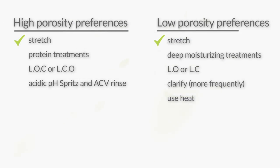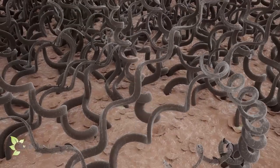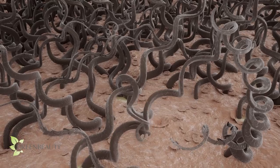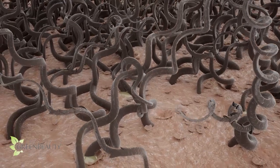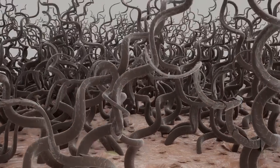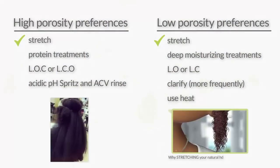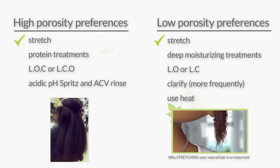Low porosity hair types also benefit a lot from stretching, for a different reason. Tight cuticles make hair strands more springy, so when a hair strand sheds it's more likely to jump out and get tangled with another strand to create knots. Also, more springy hair strands mean more tight shrinkage — as your hair shrinks, tight textured strands loop around one another to create even more knots. So keeping your hair stretched helps you avoid knots altogether.